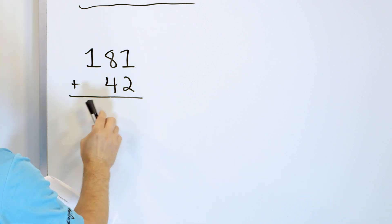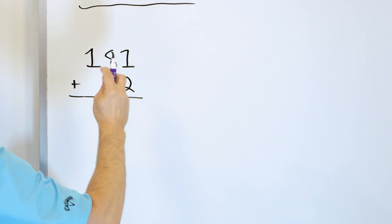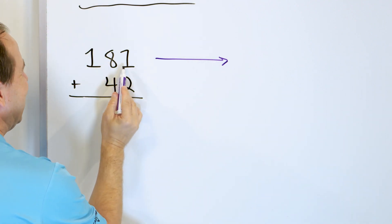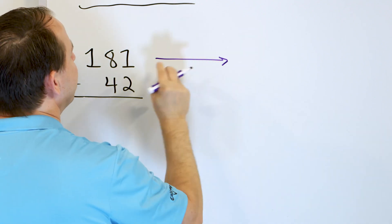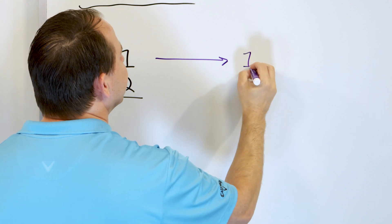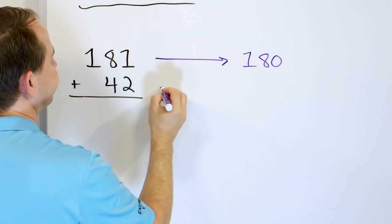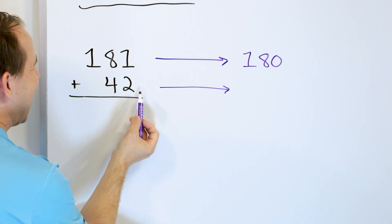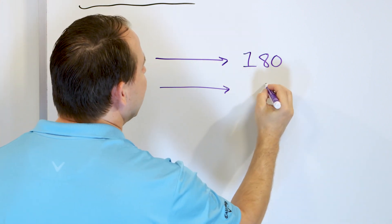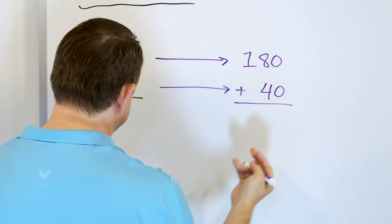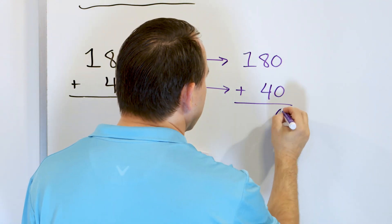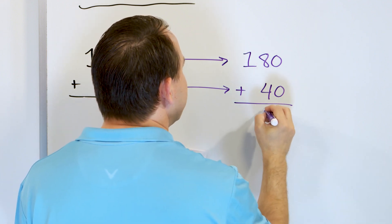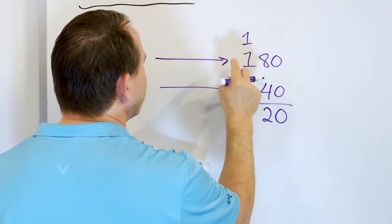So we round to the highest position that both numbers have. We round 181 to the tens place — we can go to 180 if we round down or 190 if we round up. Since one is less than five, we round down to 180. For 42, we also round to the tens place — we can go up to 50 or down to 40, but since two is lower than five, we round down to 40. We stack them up and add: zero plus zero is zero, eight plus four counts up to 12, carry the one, one plus one is two.